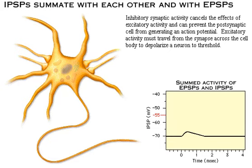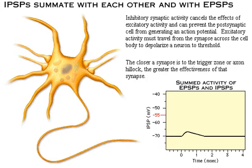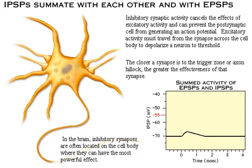Excitatory activity must travel from the synapse across the cell body to depolarize a neuron to threshold. The closer a synapse is to the trigger zone or axon hillock, the greater the effectiveness of that synapse. In the brain, inhibitory synapses are often located on the cell body where they can have the most powerful effect.